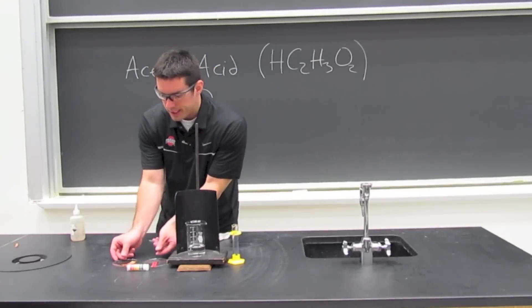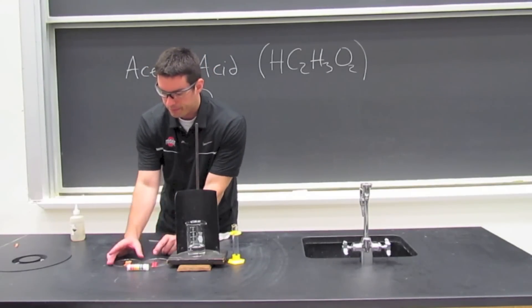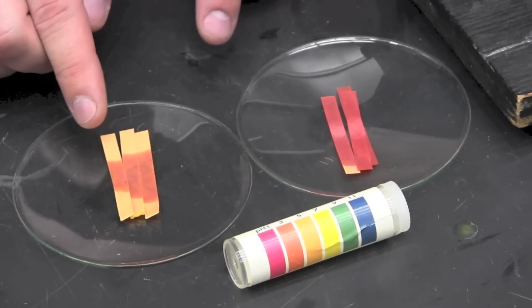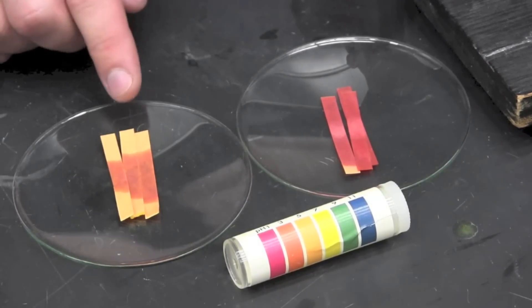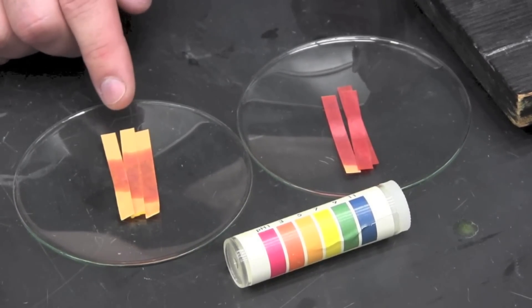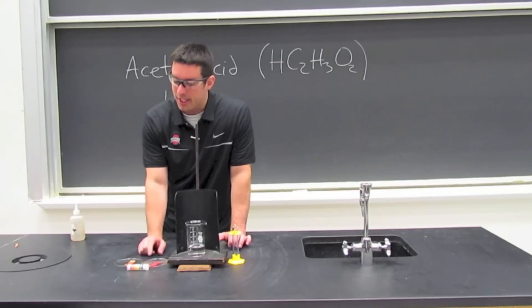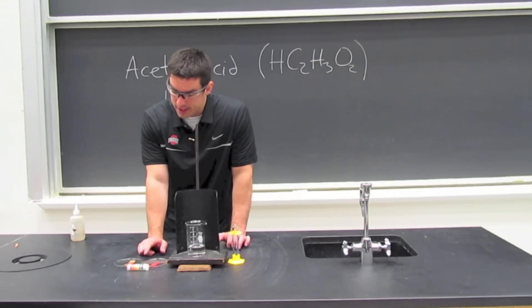So as we can see if we compare the relative color in the pH paper, we can see the pH changed, or the pH got larger, which means the concentration of H plus ions got smaller. So by adding water, we decreased the concentration of H plus ions in this solution.